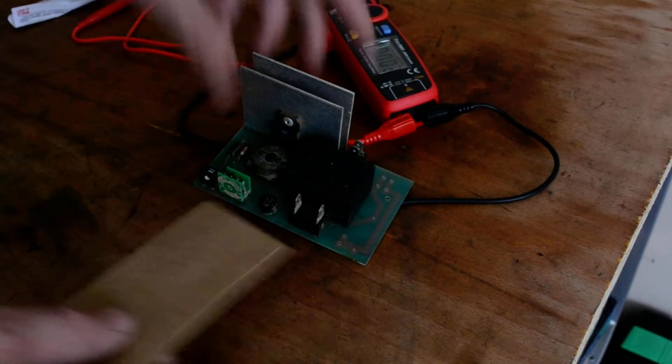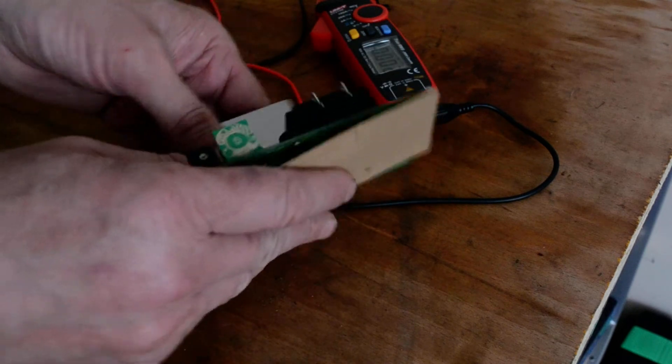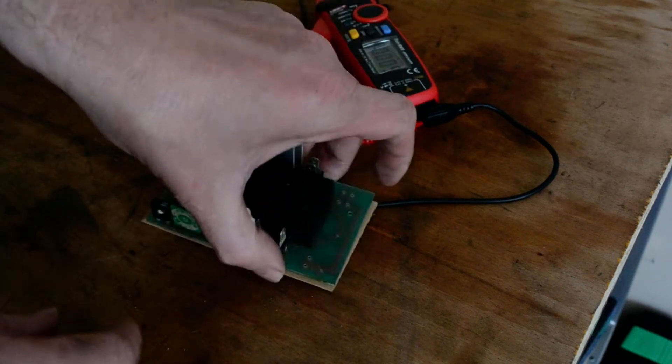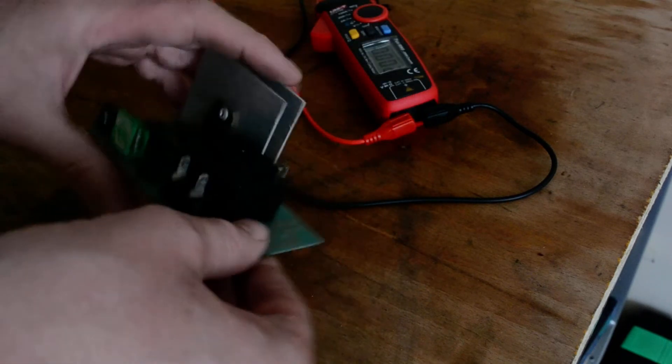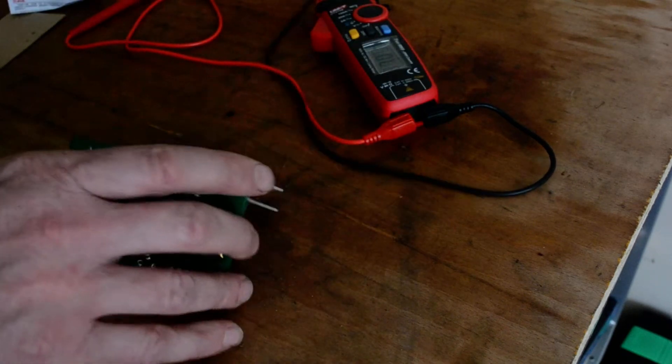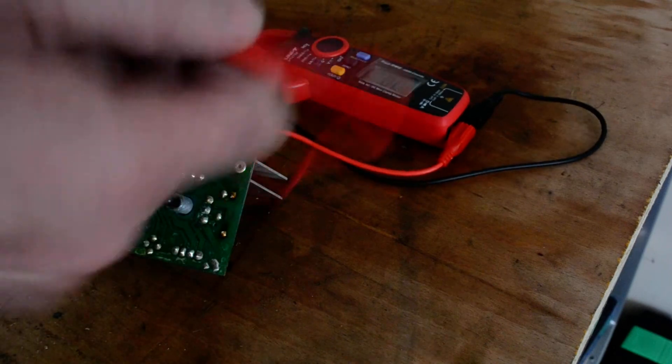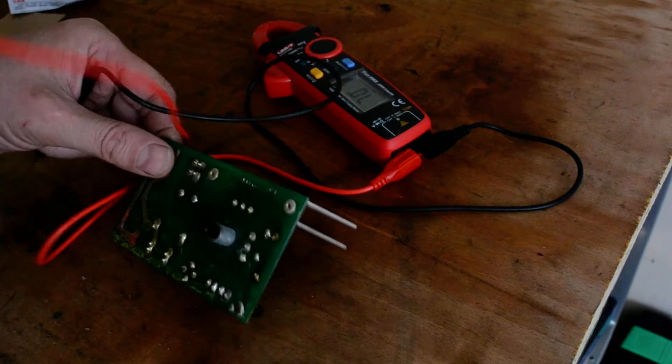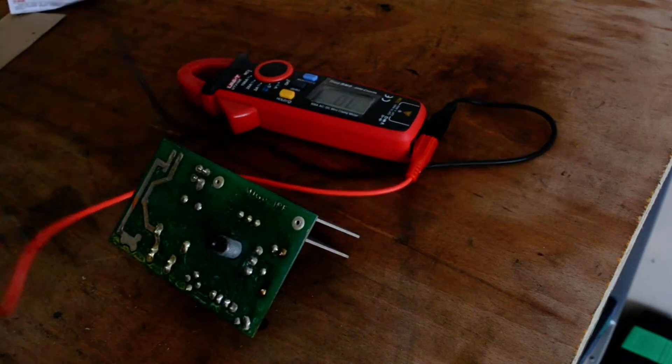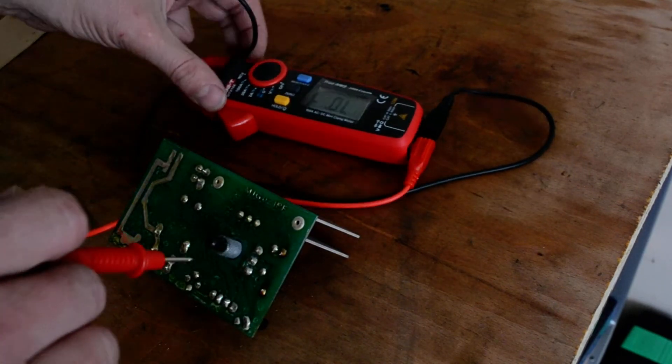That goes on there, just isolates it from that side of the casing. So basically, first of all, test the transformer. If that goes open circuit or short circuit, you're in trouble. Let's test both sides of that, put it...